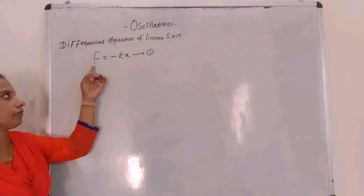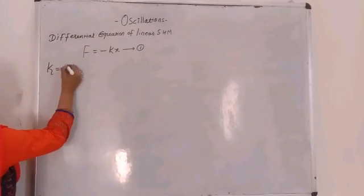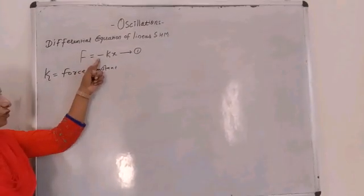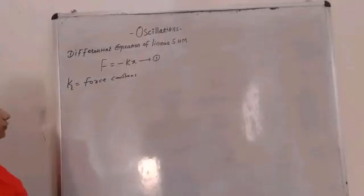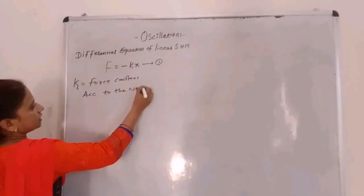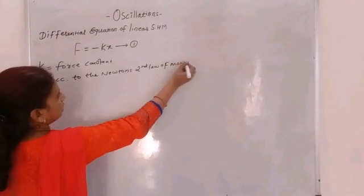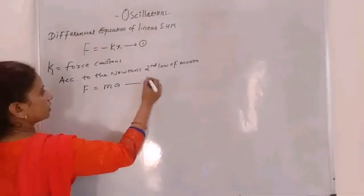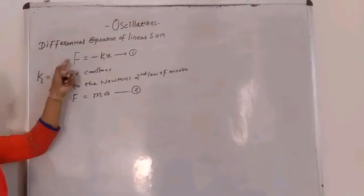We have already seen this equation in the previous lecture: restoring force F equals minus K times X. Here K is the force constant, and the negative sign shows that force and displacement are oppositely directed. Now, according to Newton's second law of motion, force equals mass times acceleration.